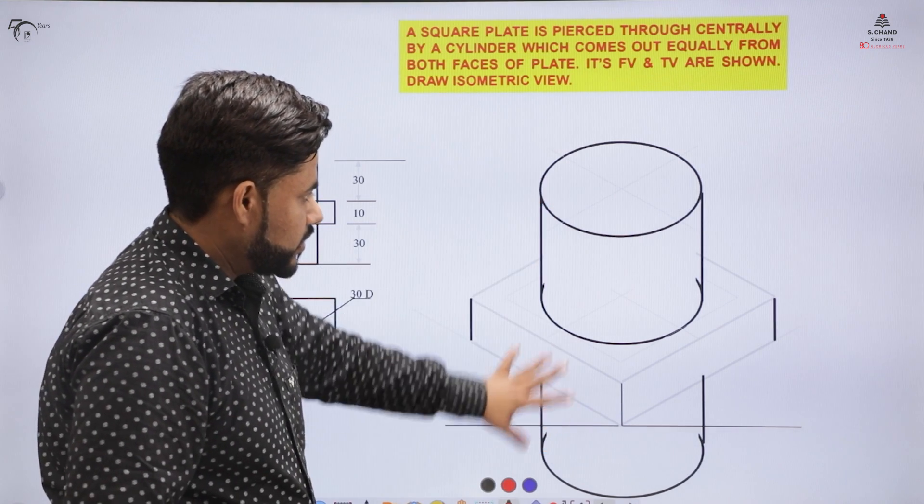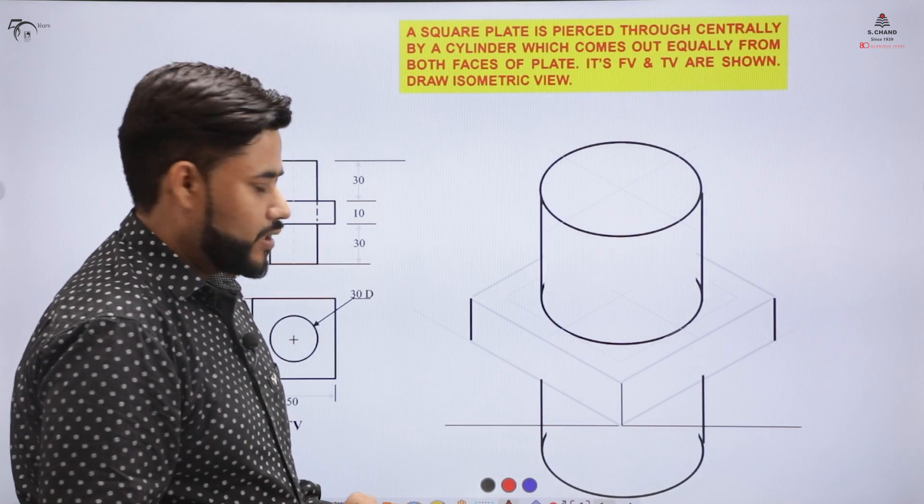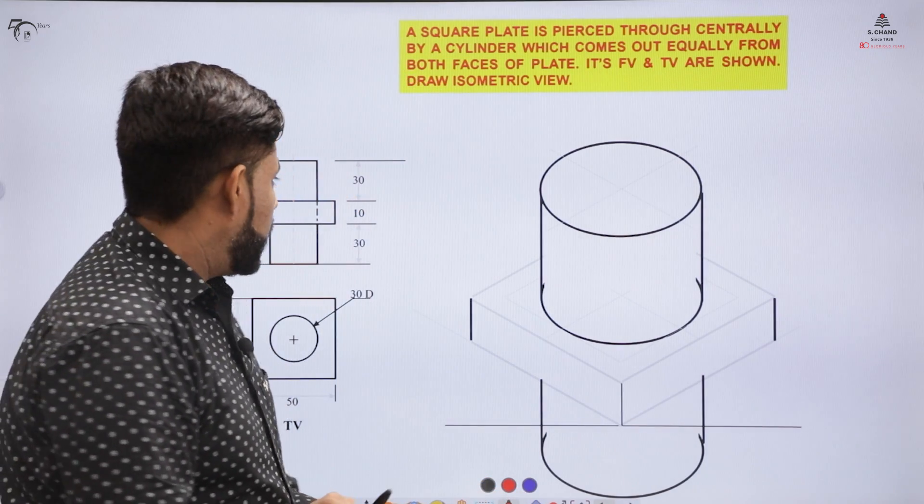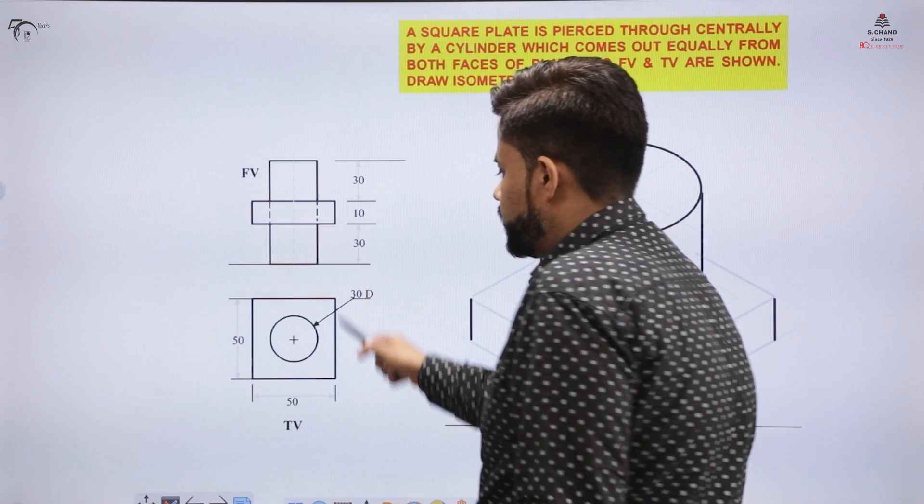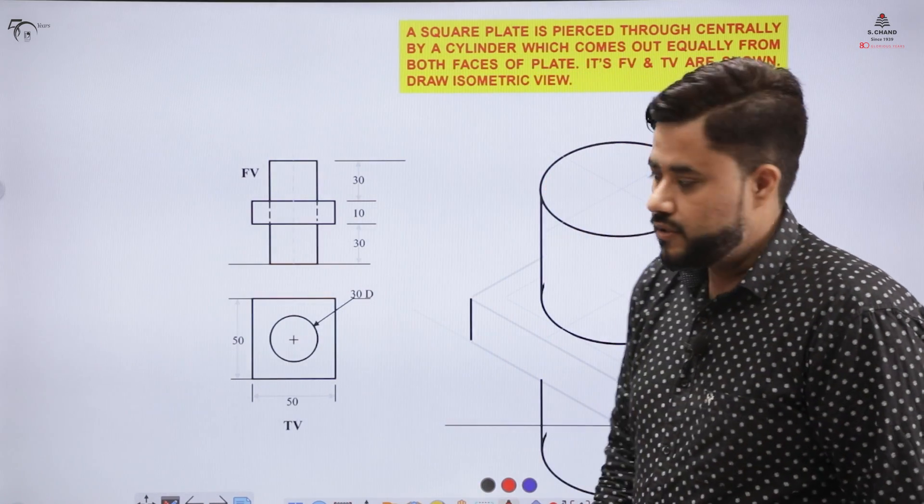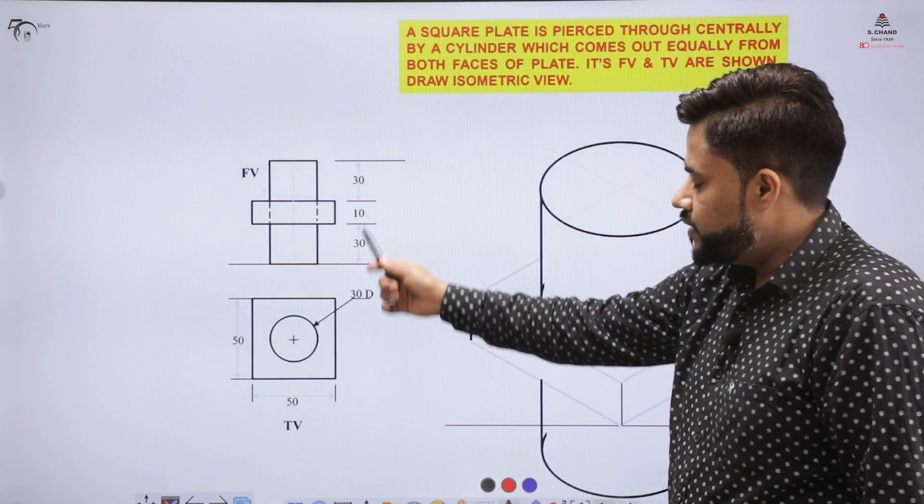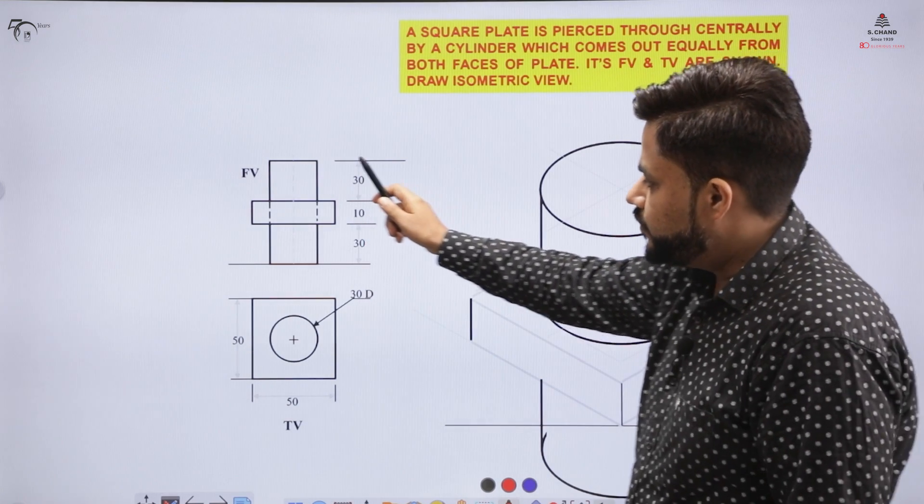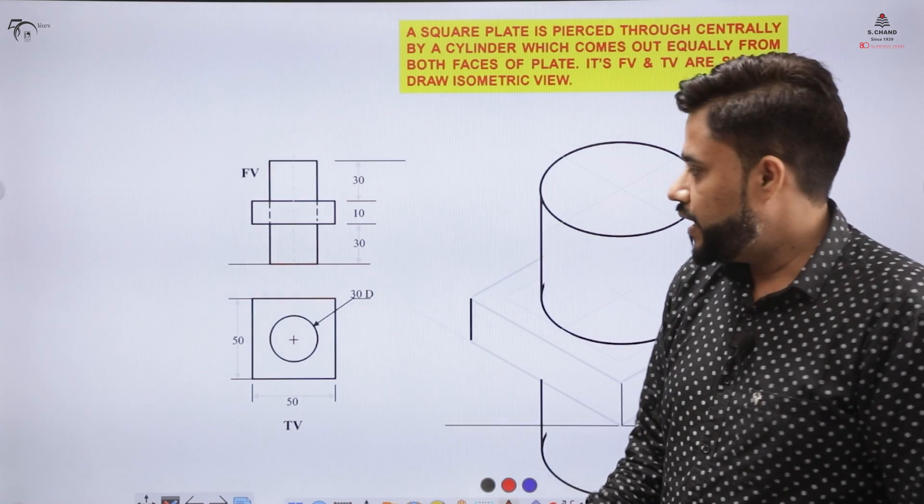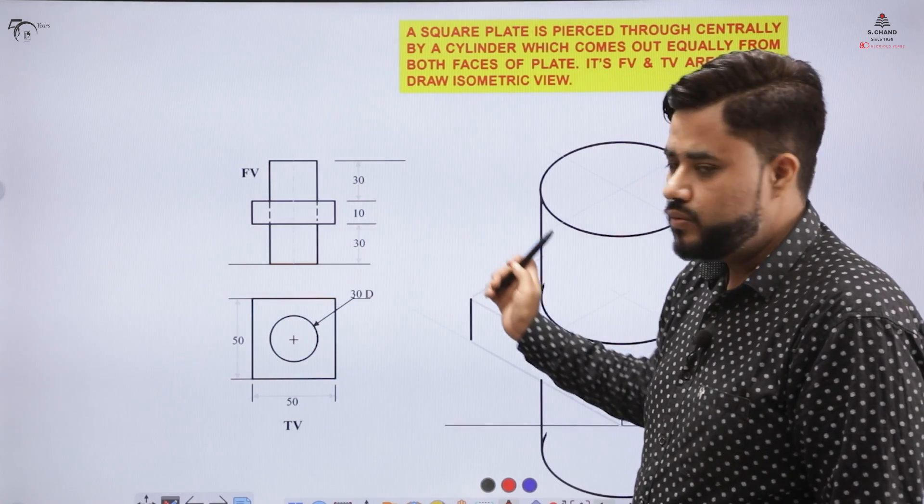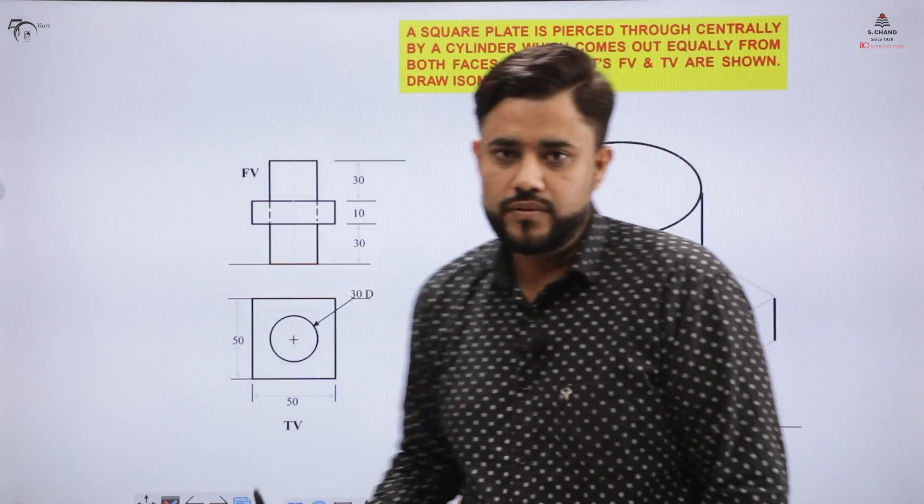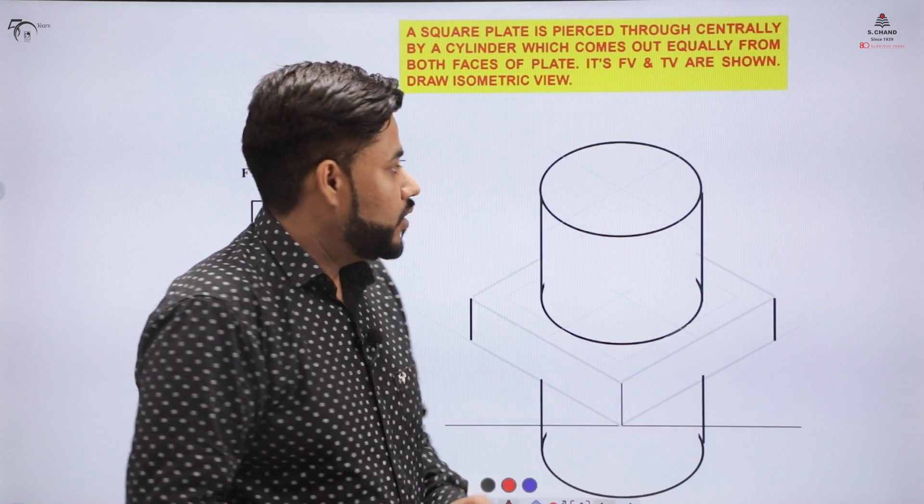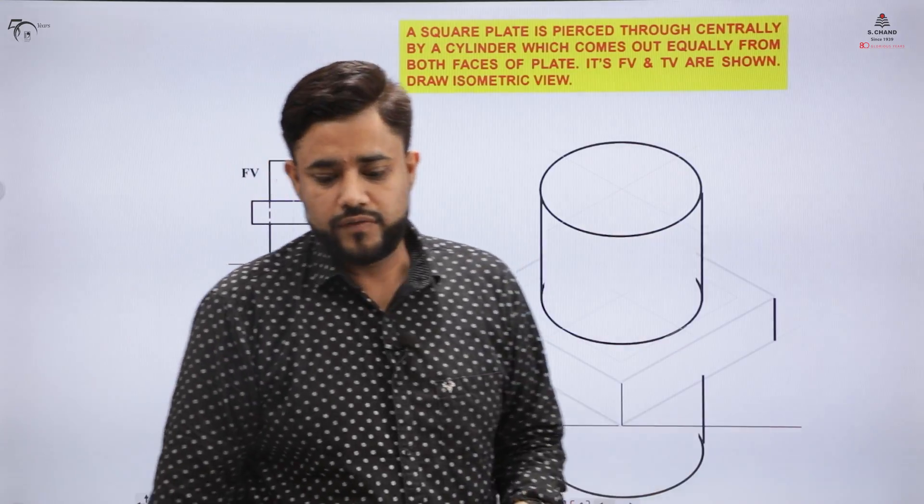This comes to the actual picture of the isometric 3D view of the orthographic view which is given to you in the question. You have been given the front and the top view of the object and you need to convert this into a three-dimensional view. This is the procedure on how to convert that orthographic view into a three-dimensional view.